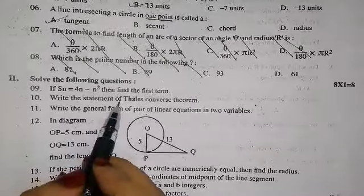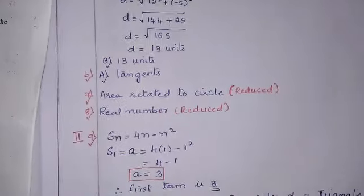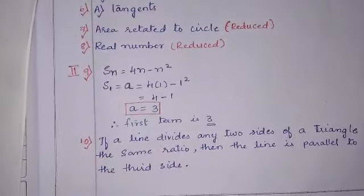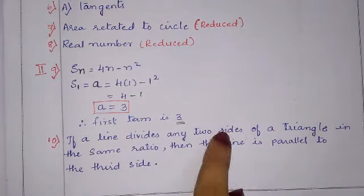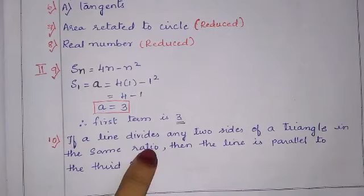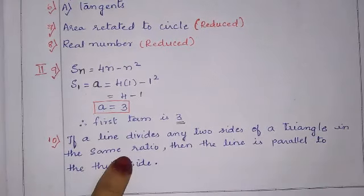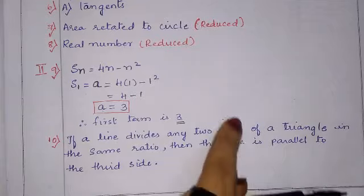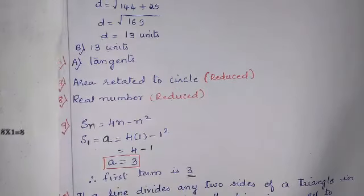Next question: write the statement of the Thales converse theorem. The converse of Thales theorem states that if a line divides any two sides of a triangle in the same ratio, then the line is parallel to the third side — which is the reverse of Thales theorem.